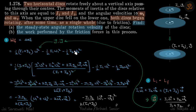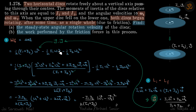You can substitute the value of ω here and technically that is the answer, because everything we have is given in the problem — I₁ and I₂ are given, and ω₁ vector and ω₂ vector are also given. But we are going to simplify that a bit.